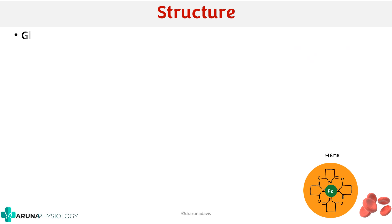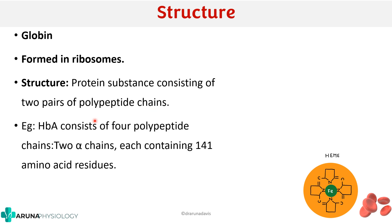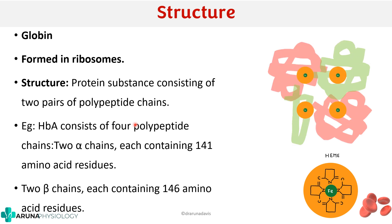The globin part is formed in the ribosomes and is basically a protein substance consisting of 2 pairs of polypeptide chains. For example, in hemoglobin A we have 4 polypeptide chains — 2 alpha chains containing 141 amino acids and 2 beta chains containing 146 amino acids. These pairs of polypeptide chains form the globin part, and together with heme we have hemoglobin.